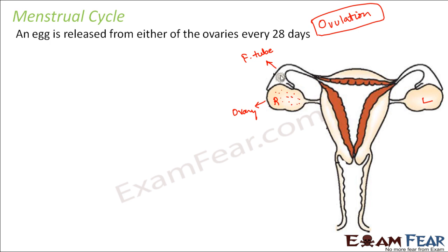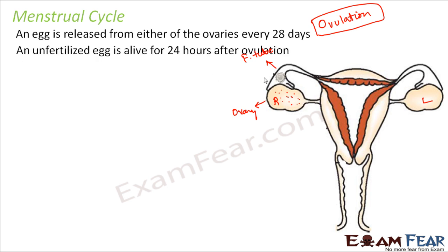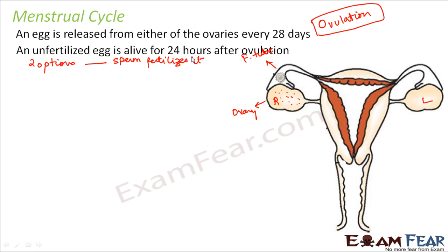This is the egg cell which gets released from the ovary into the fallopian tube. This unfertilized egg remains alive for 24 hours after ovulation. After it has been released into the fallopian tube, this egg is not yet fertilized — because for fertilization, a sperm needs to come and fuse with it. So this unfertilized egg will remain alive for 24 hours. Now two things can happen — there are two options.